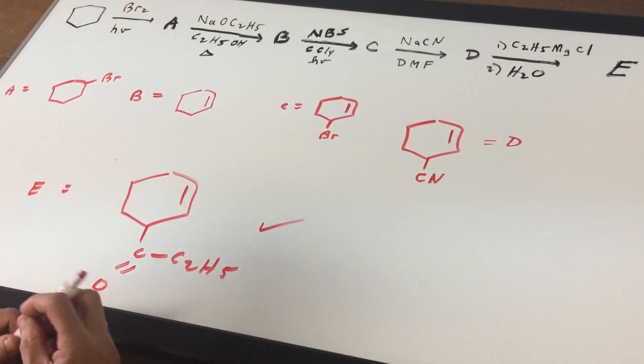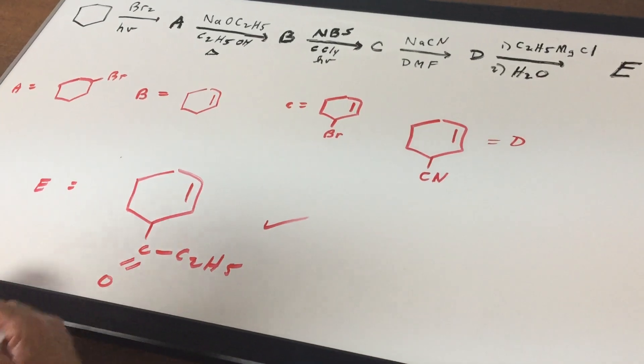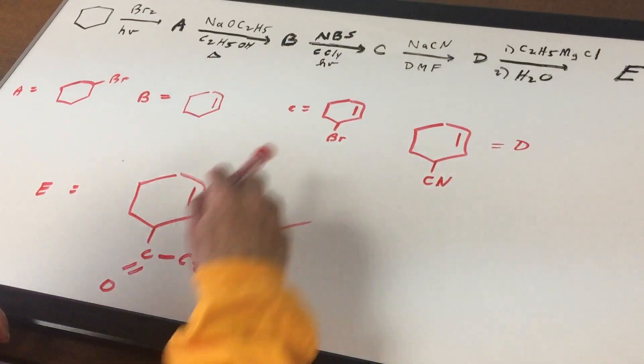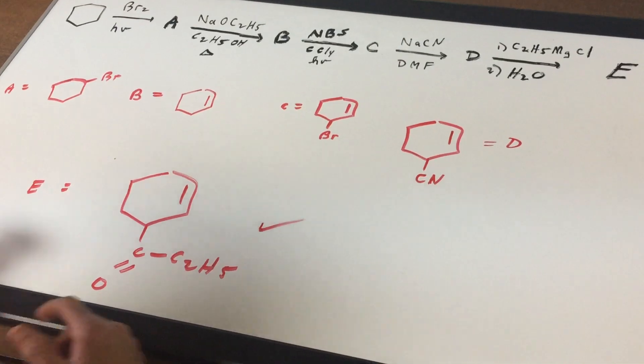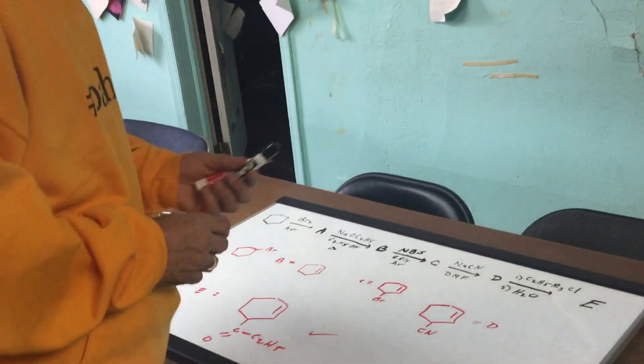I hope that this reaction sequence gives you a good idea what to expect in the DAT. Halogenation, we did elimination, we did an allylic substitution, we did an SN2 and I polished it off with a Grignard. Good day to you. I hope this made some sense to you.